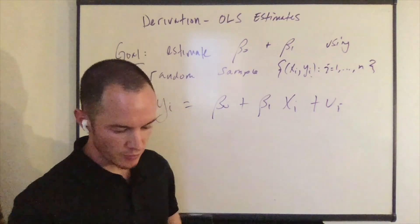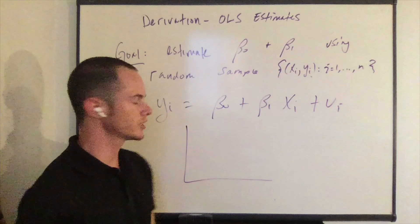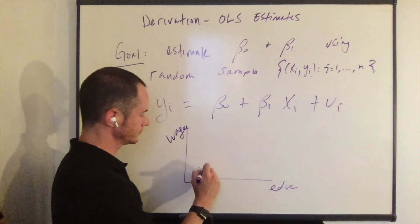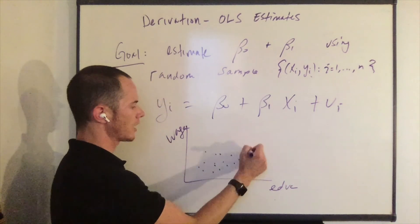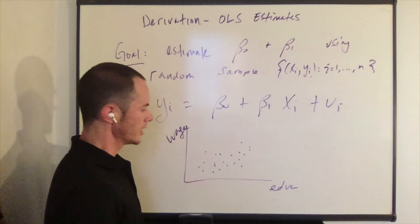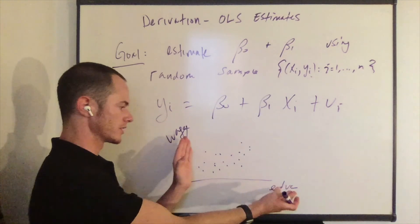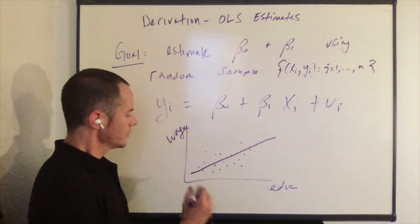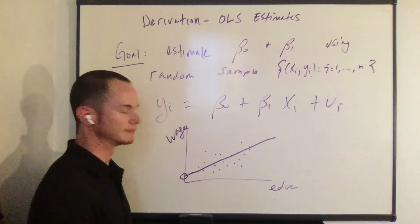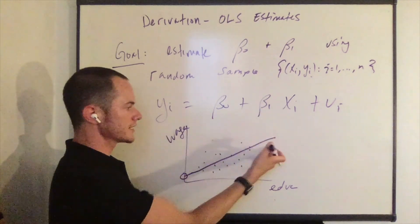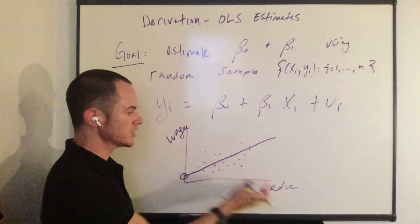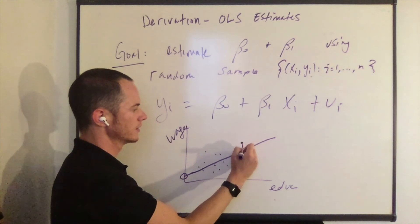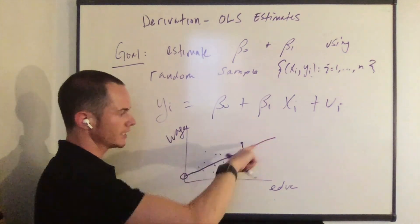Now what does this represent if we are thinking about our relationship between wage and education? We may have several observations like you see here on the board, where we have an observation for wage and an observation for education, and the best fit line might look something like this. The intercept beta naught is represented by the value of wage when education is zero — kind of nonsensical, but that is what beta naught represents. Beta one is the slope of this line. Y_i is the level of wage for a given level of education, and u_i is the error, or the distance between the regression line and the observation.